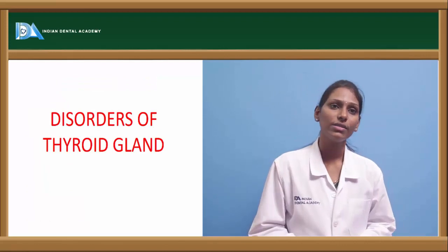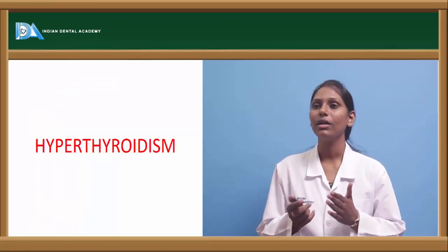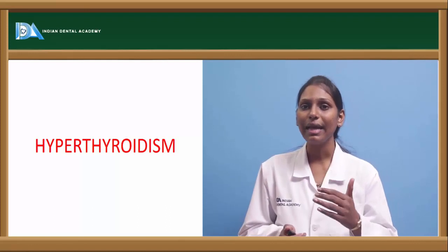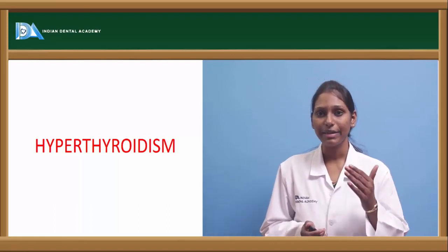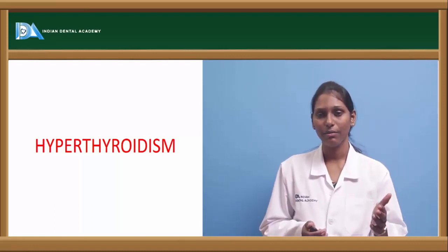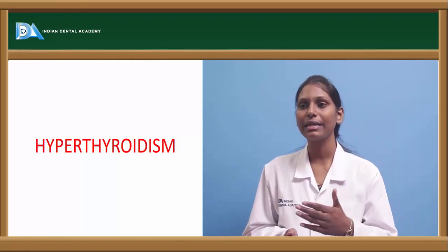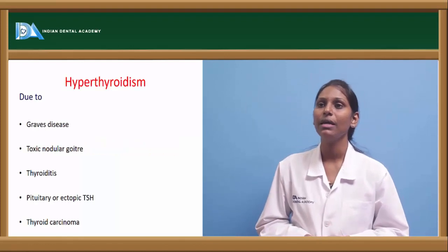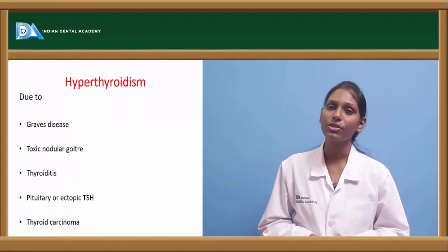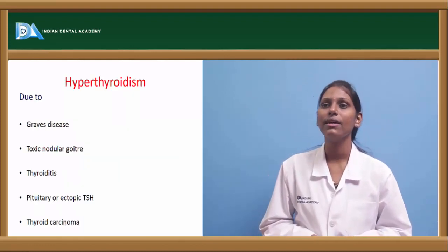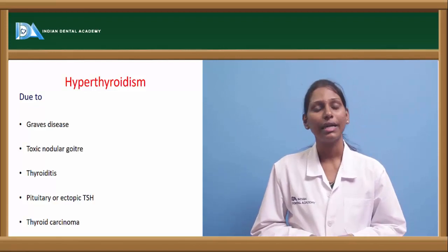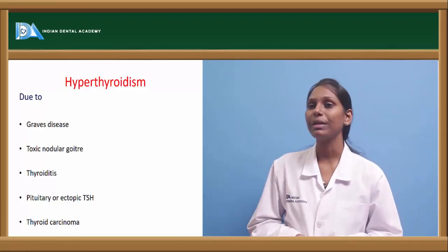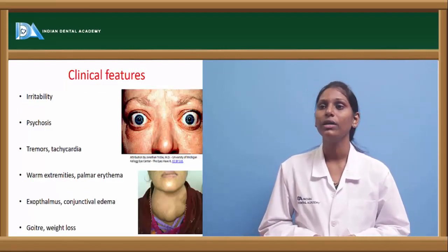When thyroid hormones T3 or T4 are elevated in the plasma, it leads to hyperthyroidism. Hyperthyroidism can be caused by Graves' disease, toxic nodular goiter, thyroiditis, pituitary or ectopic TSH, or thyroid carcinoma.